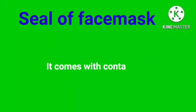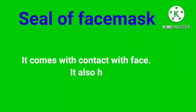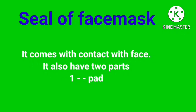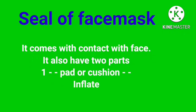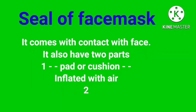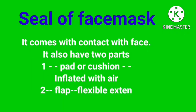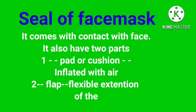Seal of Face Mask. It comes in contact with the face. It also has two parts: the first one is a pad or cushion which is inflated with air. The second one is a flap, a flexible extension of the body.